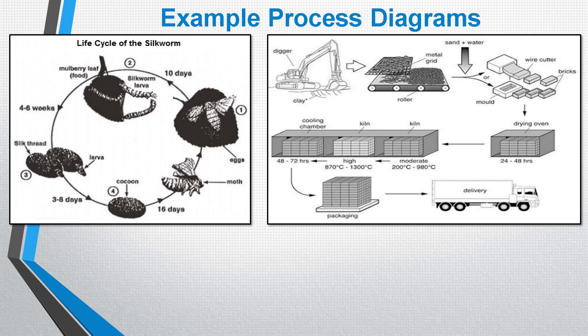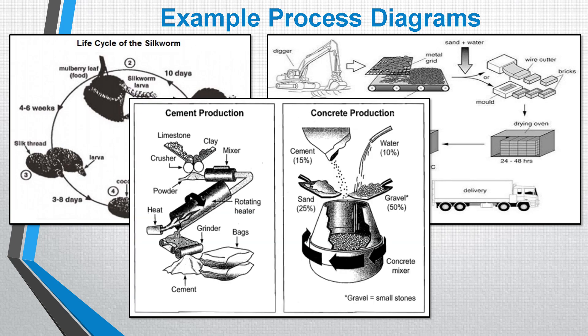You might also be faced with two pictures. In this case, we have cement and concrete production — two diagrams that we need to analyze. Again, there are different steps to the two processes and labels to help us. The important thing when you see diagrams like these is not to be worried, because there is a specific method we can use to analyze them and write really good answers.